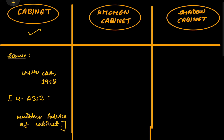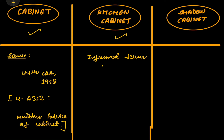Moving ahead to the kitchen cabinet — kitchen cabinet is basically an informal term. It includes people who are very close to the prime minister. There is no official source for this term.